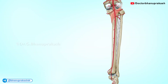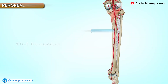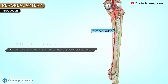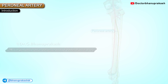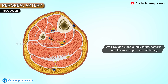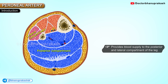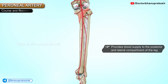Welcome to another segment in lower limb. In this video we'll be discussing the peroneal artery. Peroneal artery is the largest and most important branch of the posterior tibial artery. It provides blood supply to the posterior and lateral compartments of the leg. Course and relations.